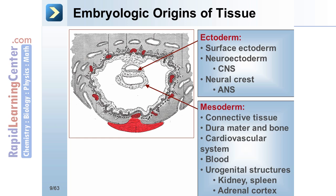The mesoderm gives rise to the formation of connective tissue, dura mater, bone, muscle, cardiovascular components, blood, urogenital structures including kidneys, spleen, and the adrenal cortex.